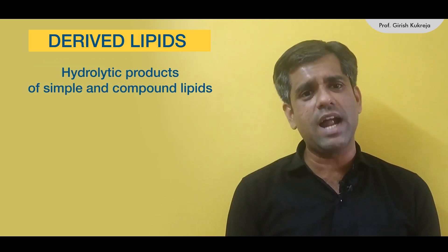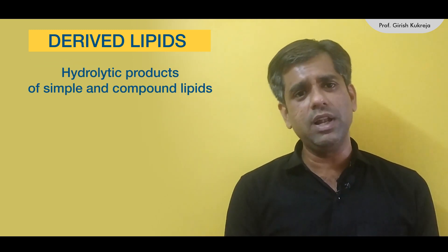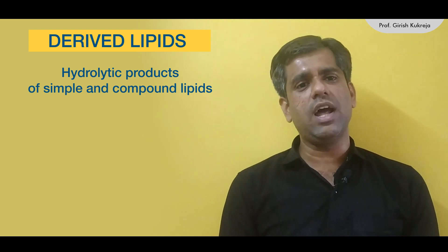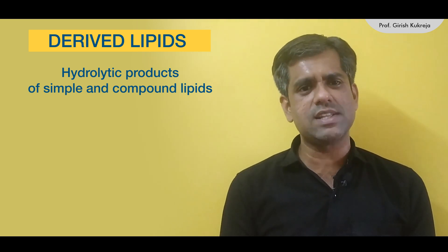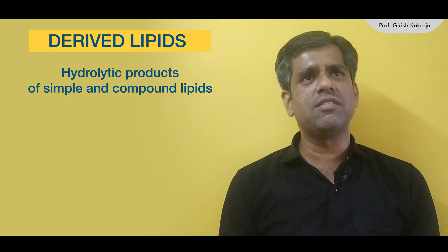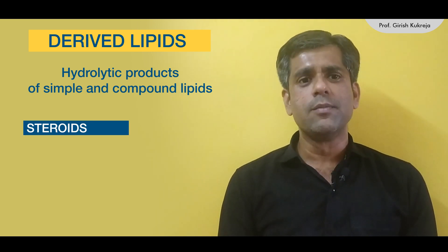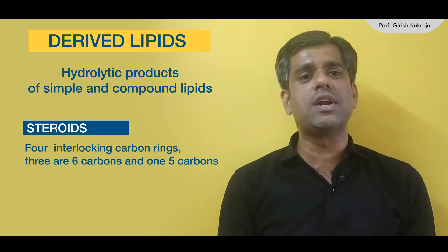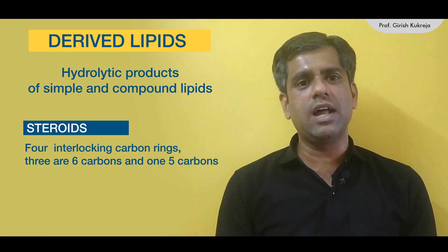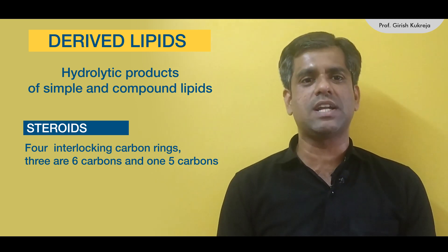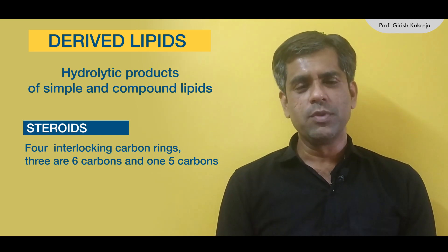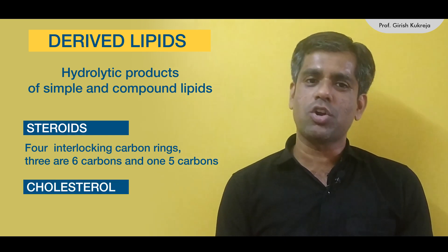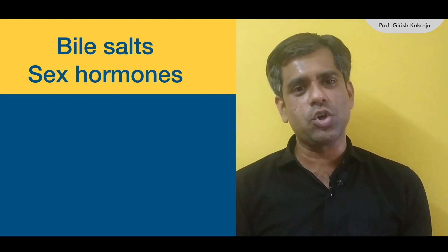We also have derived lipids, which are the hydrolytic products of simple and compound lipids. These include various molecules like carotenoids and steroids. Steroids have four interlocking carbon rings — three six-membered carbon rings and one five-membered carbon ring. One famous alcohol derivative of steroids is cholesterol. This class also includes various bile salts and sex hormones.